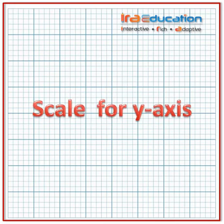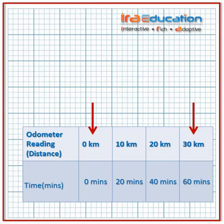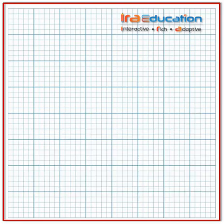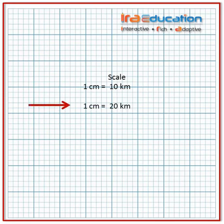Next, we choose the scale for the y-axis such that the minimum and maximum values of distance are represented and the whole graph paper is used. The minimum and maximum values of distance are 0 kilometers and 30 kilometers. We can choose one centimeter equals 10 kilometers, or one centimeter equals 20 kilometers. Let's choose the scale for the y-axis as one centimeter equals 10 kilometers.